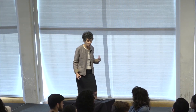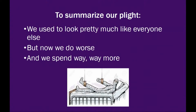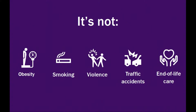So when I put it that way, you can see we used to look pretty much like everybody else. Now we do worse and we spend a lot more. And it's not because of obesity. It turns out the country in the world with the second highest rate of growth in obesity was Australia. So it can't be obesity — why is obesity destroying us and not destroying the Australians?